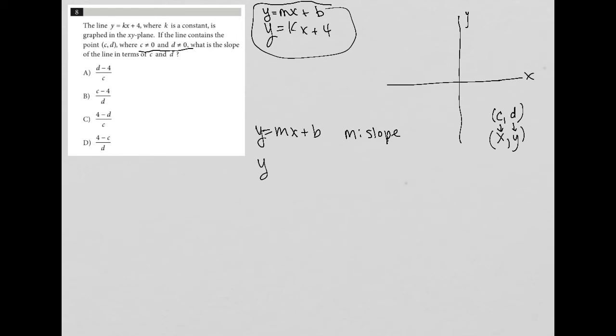Well, if I have y equals kx plus 4, that means that k is in the same position where m would be, and therefore k is the slope.